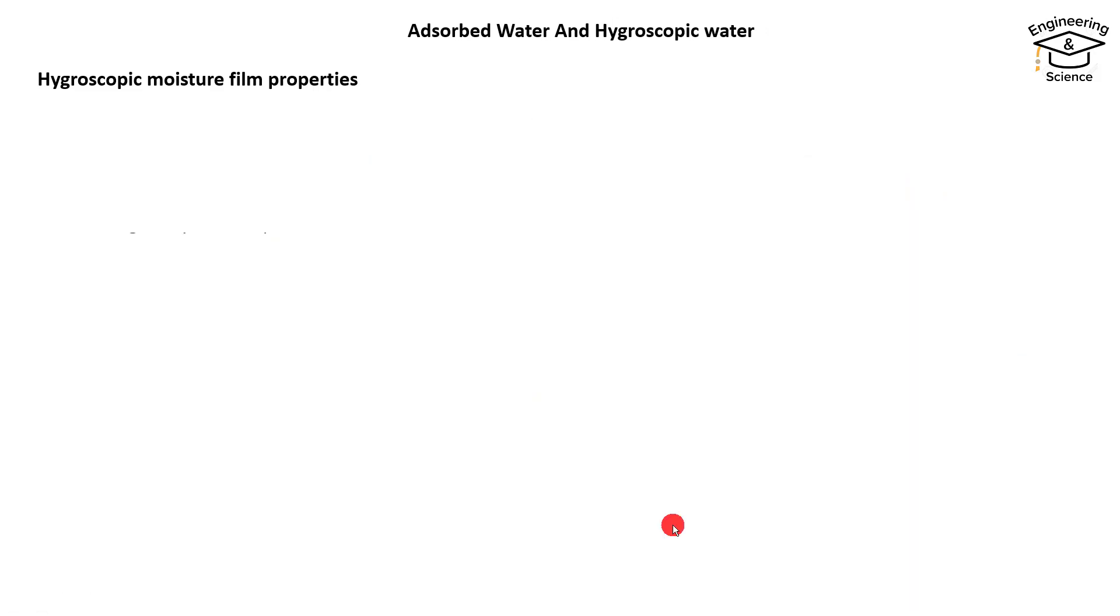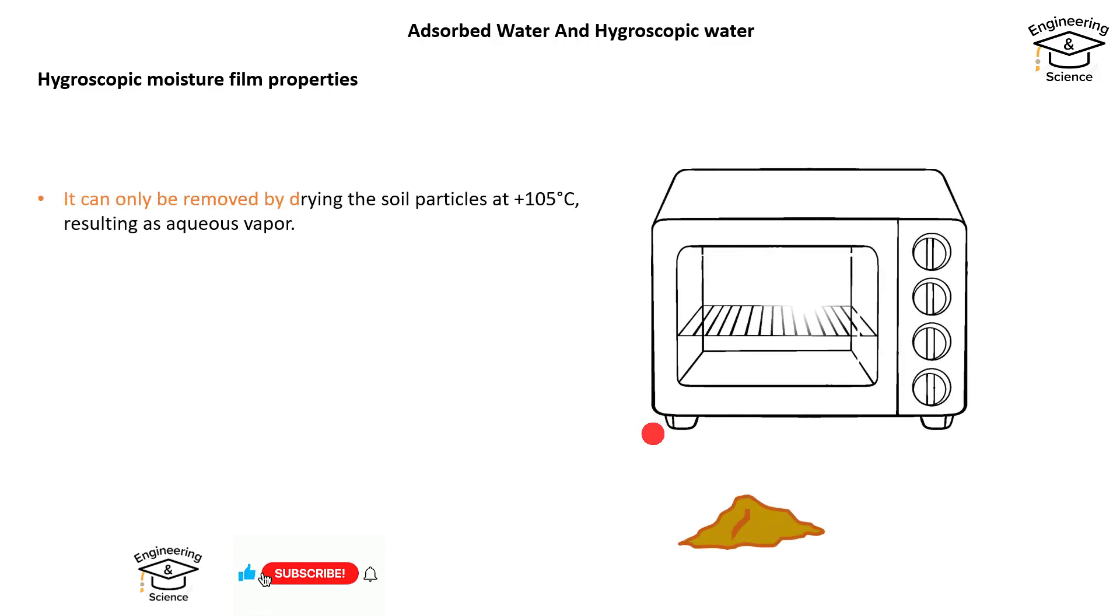Also, the hygroscopic water can't be removed by gravitational force or absorbed by plant roots. So it must be removed by drying the soil particle at 105 degrees Celsius, resulting as aqueous vapor.